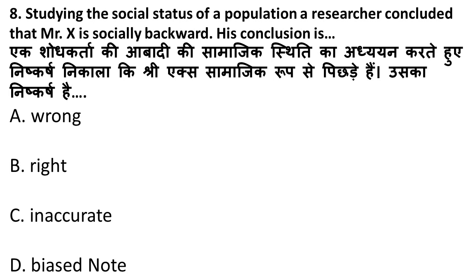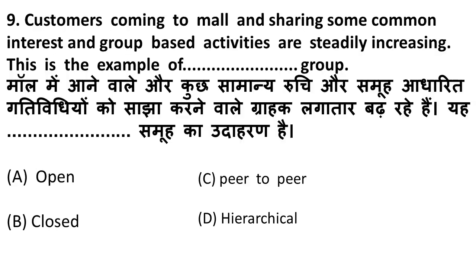Next question: studying the social status of a population, a researcher concluded that Mr. X is socially backward. We have to judge whether this conclusion is wrong, inaccurate, or biased. From a population, the researcher drew a conclusion that Mr. X is socially backward — this is inaccurate because he has not compared it with another person. If the statement were 'Mr. X is socially backward compared to Y' it would be valid. This is a half and inaccurate statement.